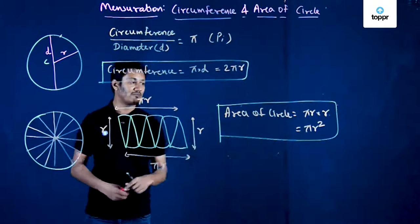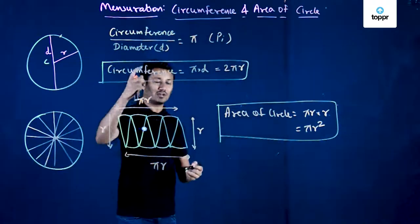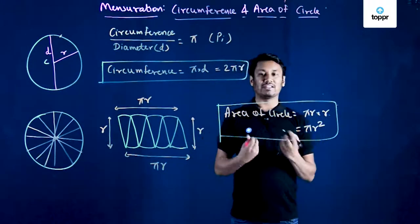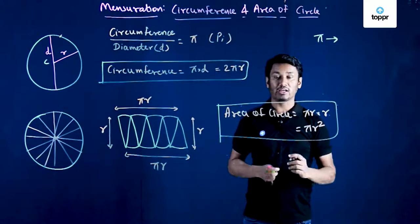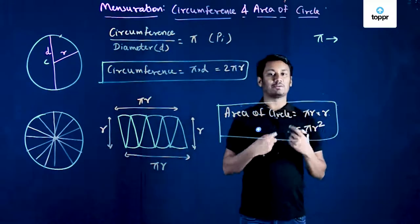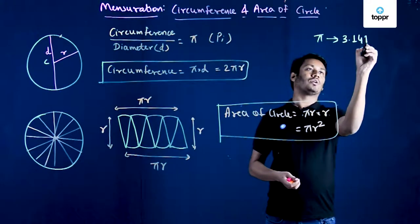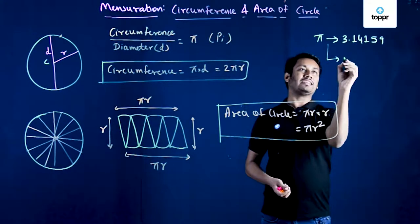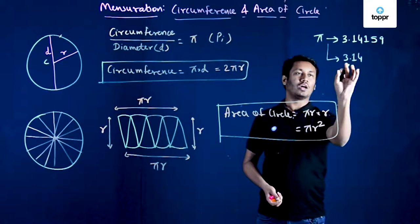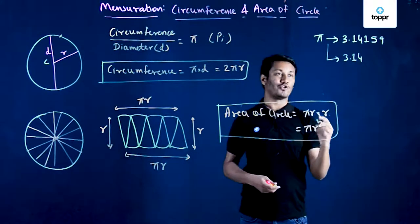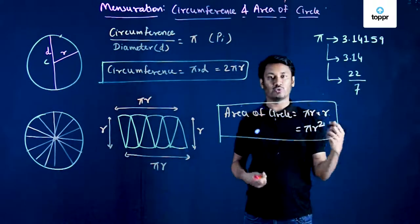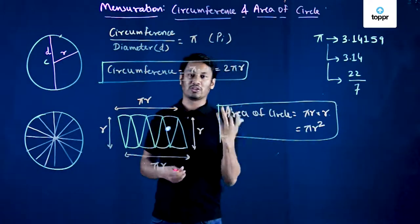If you know the radius, square it and multiply by pi to get the area. To calculate circumference as well as area, we must have the value of pi. Pi is a constant and we cannot represent it precisely using a finite number of digits, but we can write its approximate value as 3.14159. In many calculations we use 3.14, and in some cases we use the rational approximation 22/7.